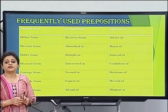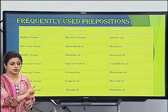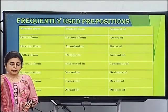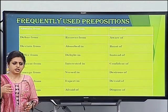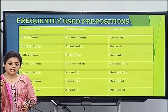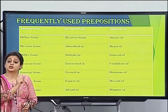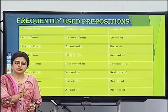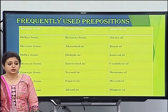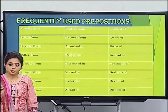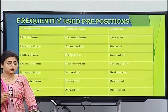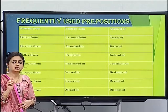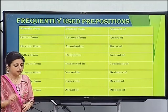Never blindly follow rules. Whenever a sentence comes, first read it. Two or three prepositions may seem suitable. Take them one by one and check against the rules in context. Students often see 'desirous' and automatically put 'of,' but that is not always right. A rule need not hold true in every situation.